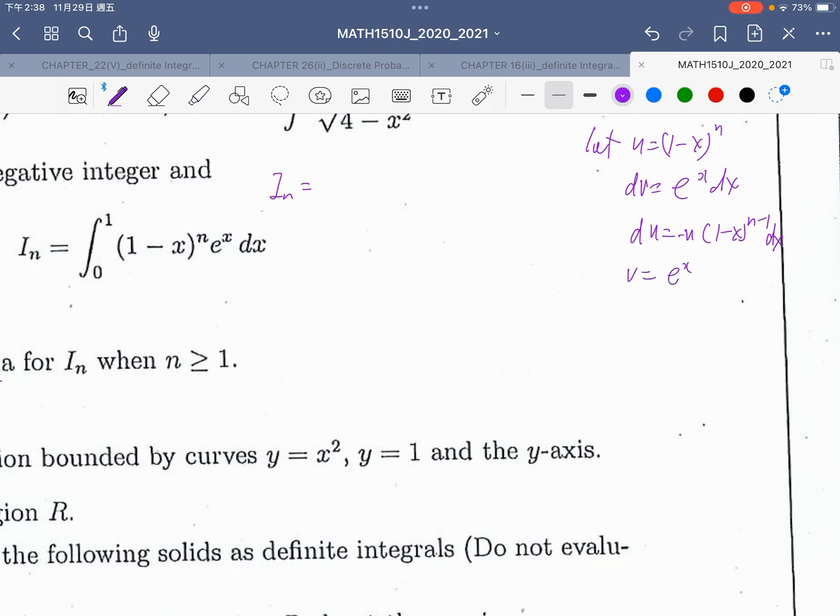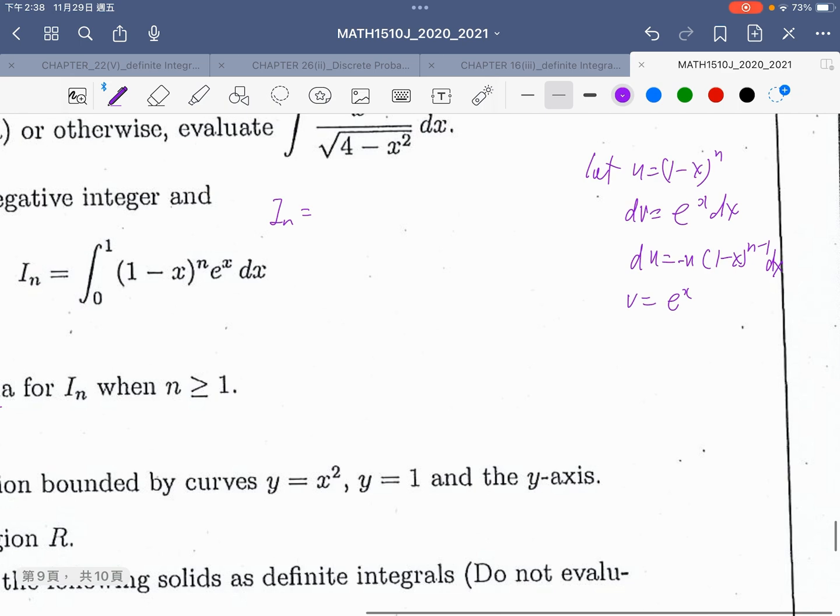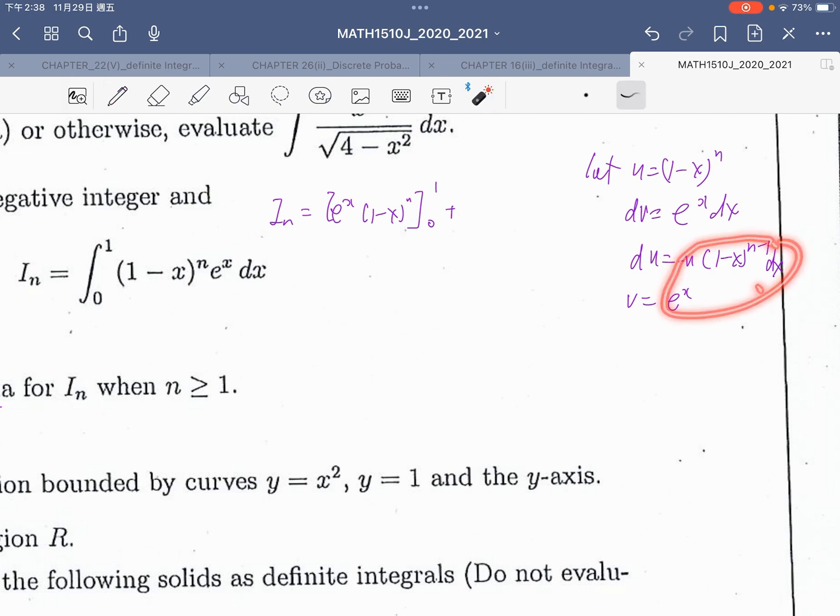Then I_n equals e^x times (1 - x)^n, aside the value 0 and 1 into the function. And here, the second part is plus the multiplication of these terms. That means plus n times the integration of (1 - x)^(n-1) times e^x dx.